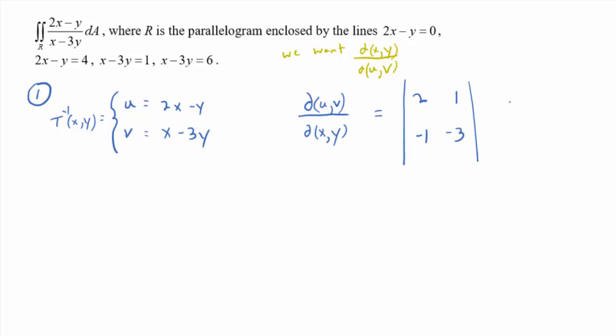Anyway, if you take that Jacobian, what do you get? Yeah, it is negative 6 minus a negative 1, right? So this guy times this guy minus this guy times this guy, and that would be negative 5, wouldn't it?